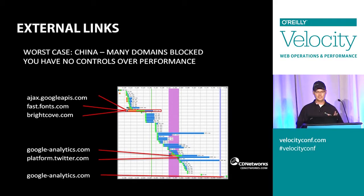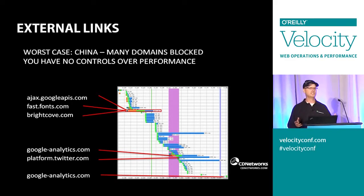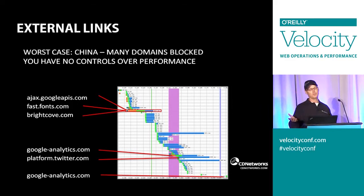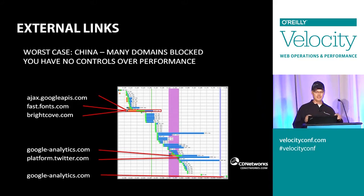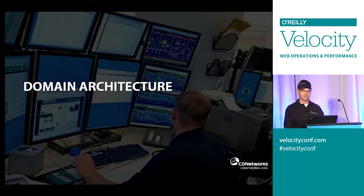One last thing to mention on the things slowing down global performance are external links. Most websites have a bunch of external links from partners collecting metrics and things like that. In the worst-case scenario, like in China and some other countries, some of these domains are going to be blocked. In the best case, you need to make sure that your third parties match what your site is trying to achieve in terms of performance, otherwise you'll get blocking.